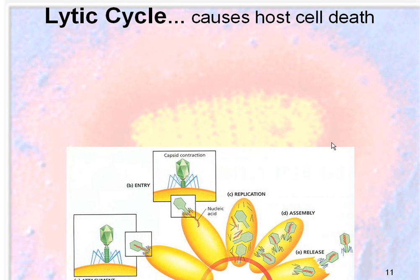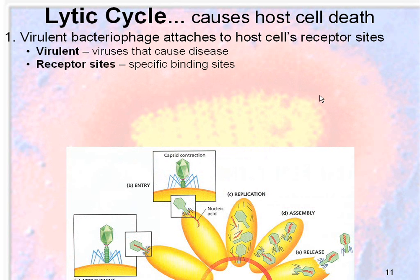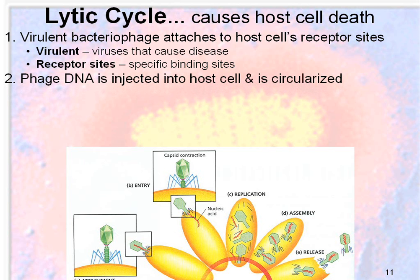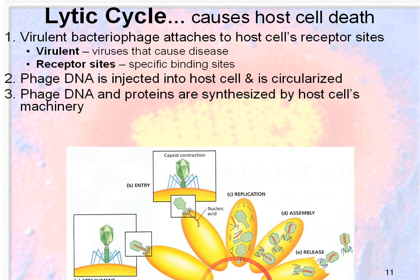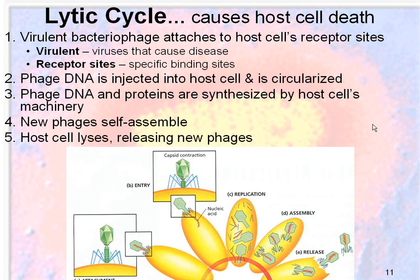What you just watched was an example of the lytic cycle, which causes the host cell to die. Step one: a virulent bacteriophage — one that causes disease — attaches to the host cell's receptor sites. The phage DNA is injected into the host cell and then circularized. The phage DNA and proteins are synthesized by the host cell's machinery — the host cell makes the DNA and proteins for the virus without even knowing. Then the new phages self-assemble and the host cell lyses or bursts, releasing those new phages.